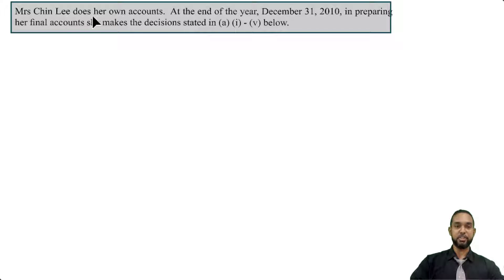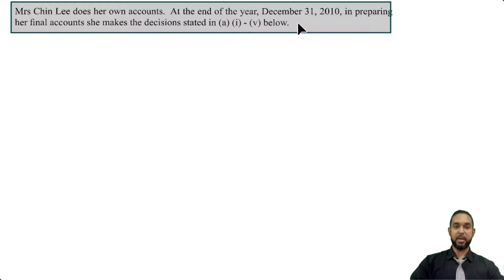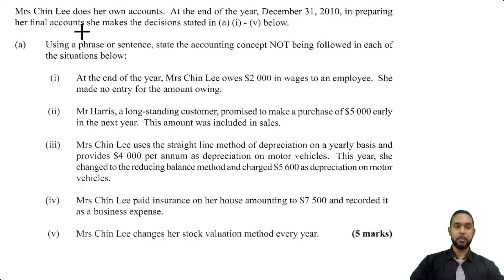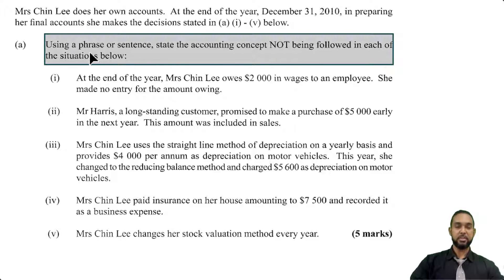The question reads that Mrs. Chinlee does her own accounts at the end of the year, December 31st 2010. In preparing her final accounts — income statement and balance sheet — she makes the decisions stated in items one to five below. Using a phrase or sentence, state the accounting concept not being followed in each of the situations below.